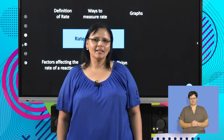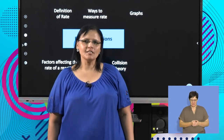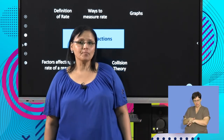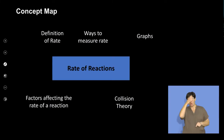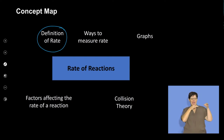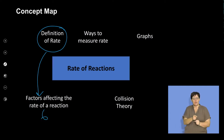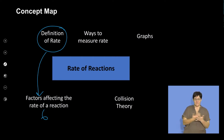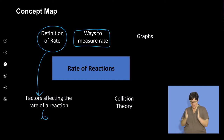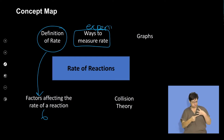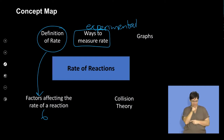Welcome back from the break. We will continue with rates of reactions. If we go back to our concept map, we first did the definition of rates of reaction, then we looked at the factors affecting the rate of reaction, including the six factors. Now I would like us to look at the ways to measure rate experimentally, and I will also show some graphs to sensitize us to what will follow.